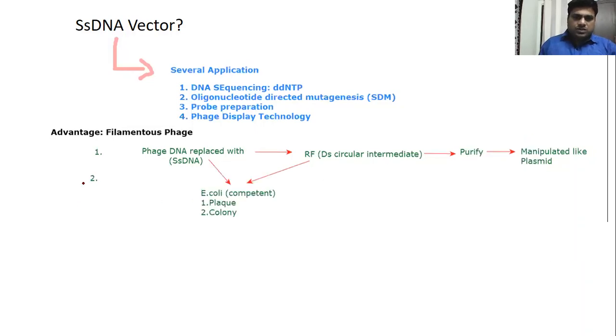Second advantage: this phage DNA exists as both single-stranded and double-stranded circular forms. Both can be transformed or manipulated and transplanted to competent E. coli, forming in different forms depending upon the conditions.